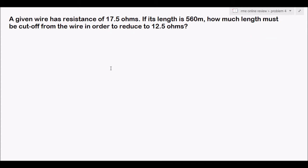Problem 4: A given wire has a resistance of 17.5 ohms. If its length is 560 meters, how much length must be cut off from the wire in order to reduce its resistance to 12.5 ohms?